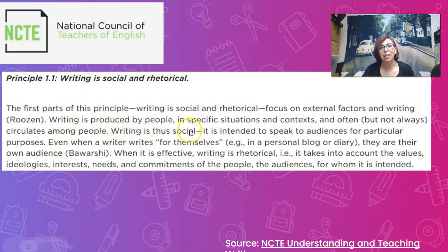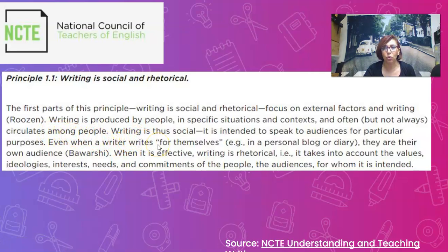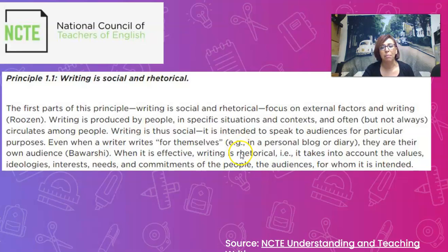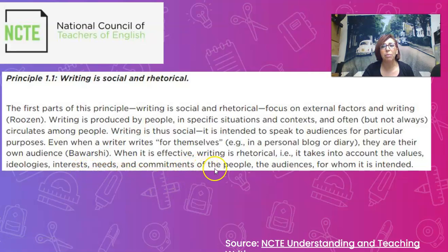It says: writing is produced by people in specific situations and contexts, and often — but not always — circulates among people. Writing is thus social. It is intended to speak to audiences for particular purposes. Even when a writer writes for themselves, for example in a blog or diary, they are their own audience. When it is effective, writing is rhetorical — it takes into account the values, ideologies, interests, needs, and commitments of the audiences for whom it is intended.